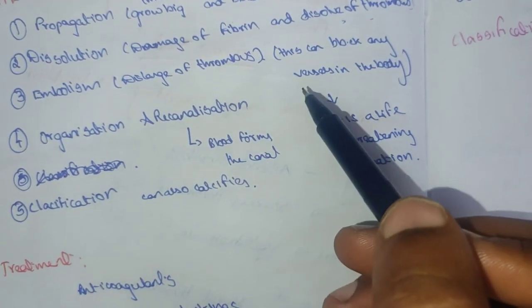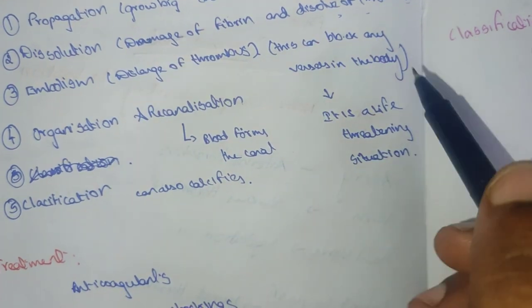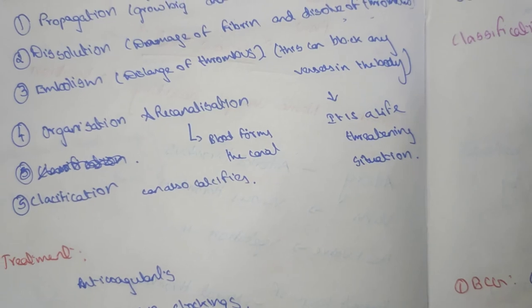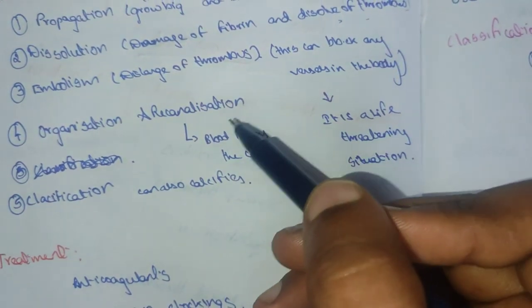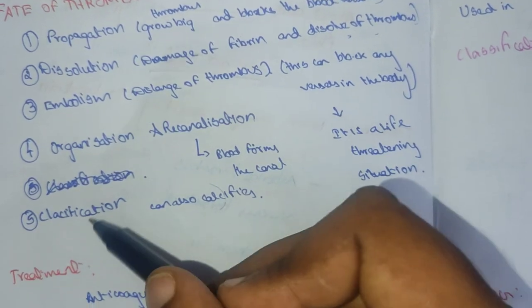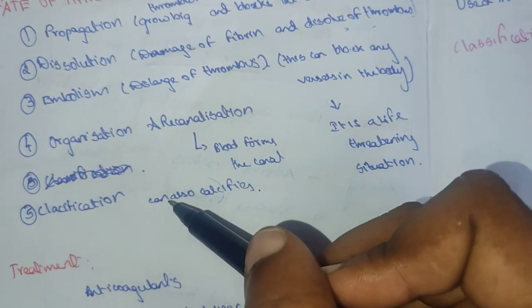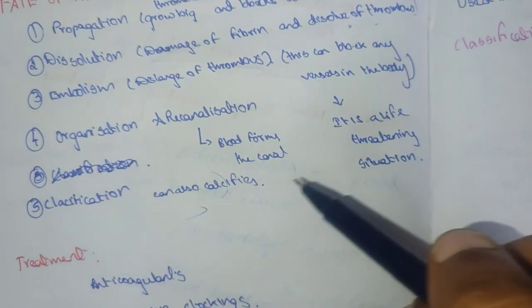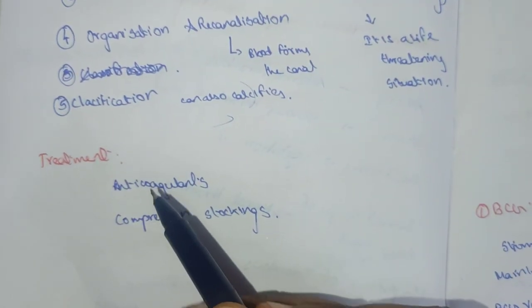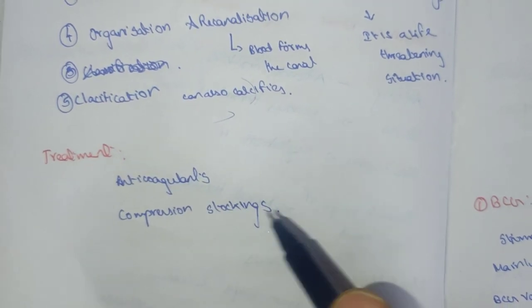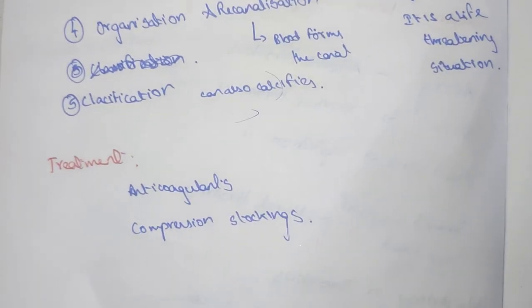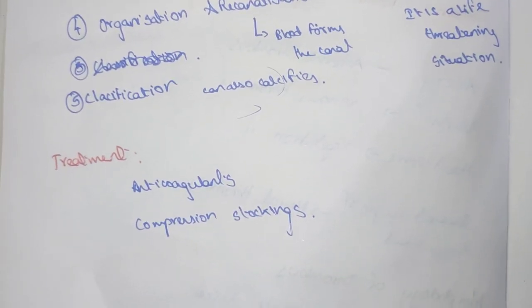Organization and recanalization: if a thrombus is formed in a capillary, due to blood pressure a small canal forms through it, which is known as recanalization. The thrombus may also calcify. Treatment includes anticoagulants and compressive stockings. Thank you — for more videos please subscribe, like, share, and comment.